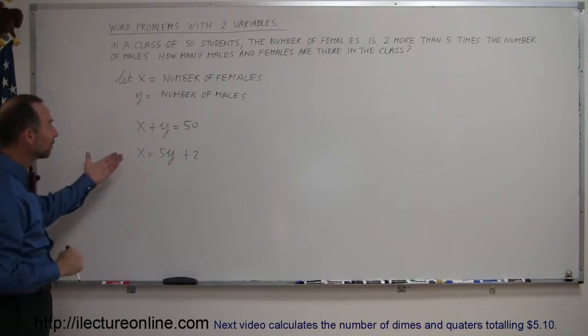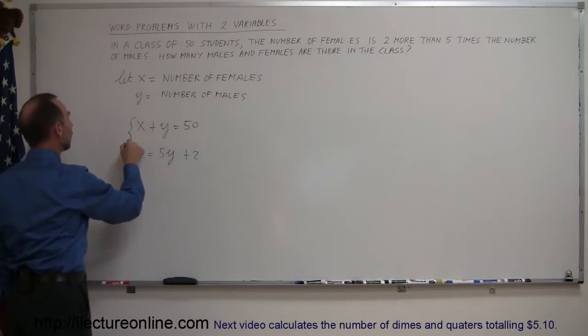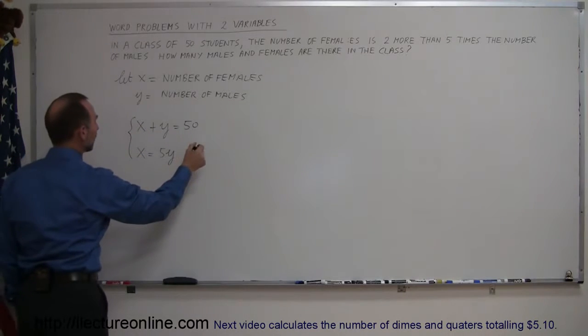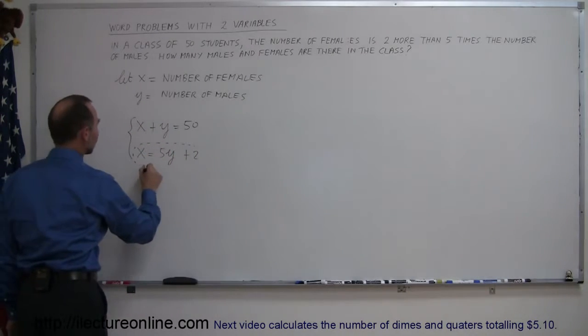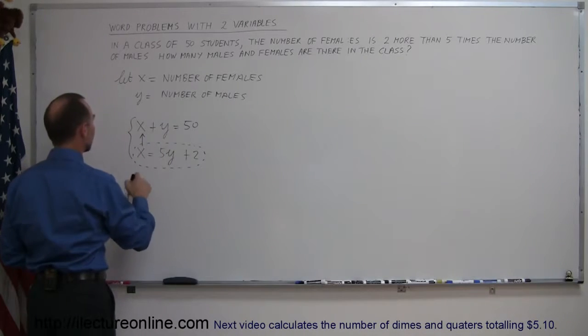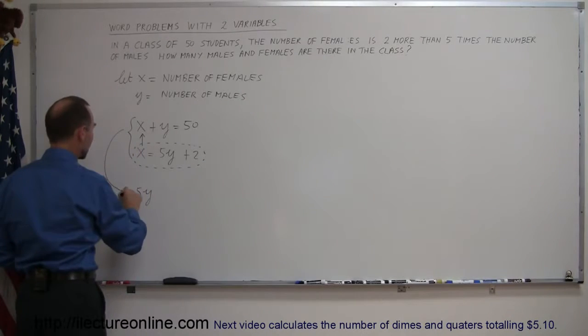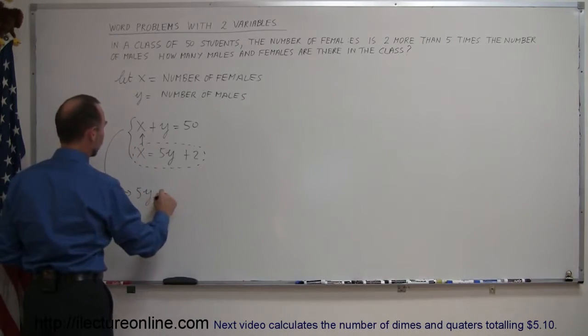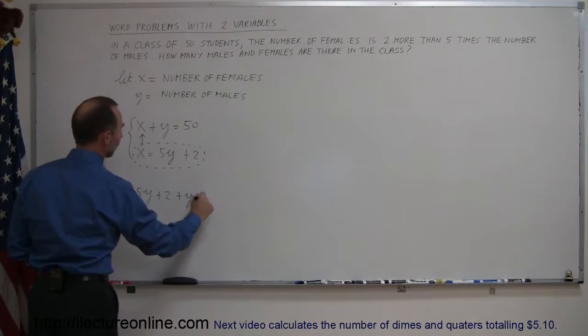So how do we solve these two equations and two unknowns? Well, we can already use this equation right here because it's already solved. It solved x in terms of y. We substitute that into the other equation, so instead of x we write five y, so that's this equation right here, five y plus two instead of the variable x, plus y equals 50.